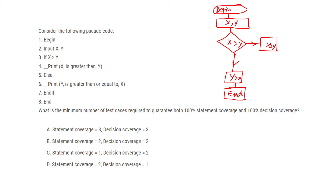What is the minimum number of test cases required to guarantee 100% statement and 100% decision coverage? For 100% statement coverage, all blocks must be covered — blocks 1, 2, 3, 4, 5. One test case covers vertically, and one more covers the x > y branch in an L-shape, so two test cases for statement coverage. For 100% decision coverage, there are two decisions, so again two test cases are required. The answer is two and two.